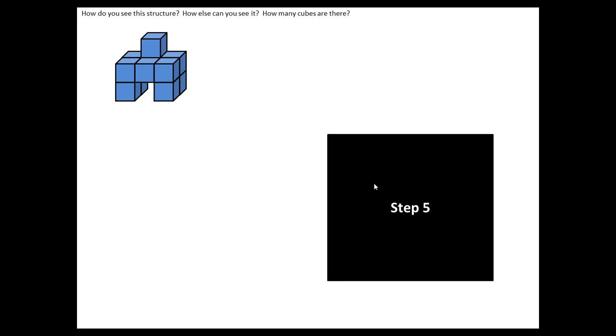On the next click, a new structure will appear, and you may have noticed that the questions on the top also changed. How do you see this structure? And then two really important questions that wouldn't have been possible with just one structure. How are the structures the same, and how are they different?